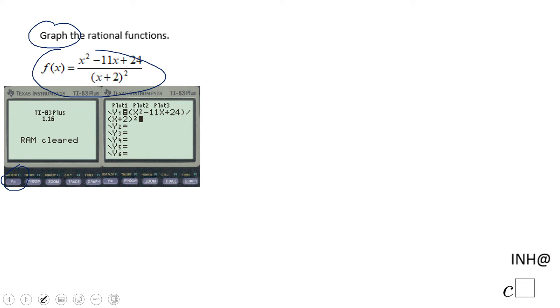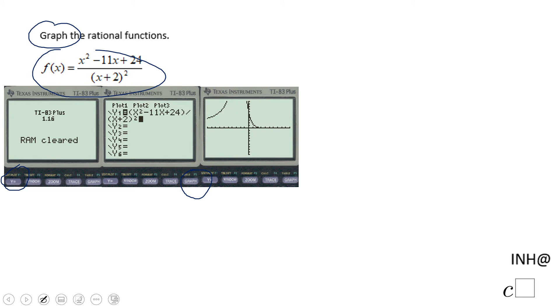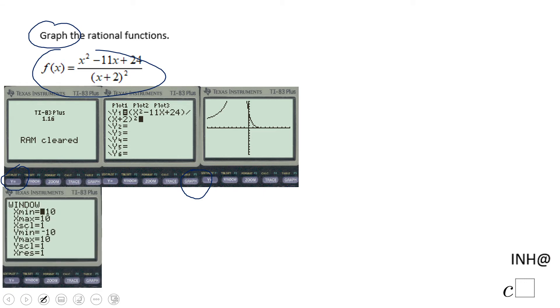Then you can click the graph button and you're going to get a graph like this. If you have the classic window, which is what you see here, X goes from negative 10 to 10, and the scale is 1.